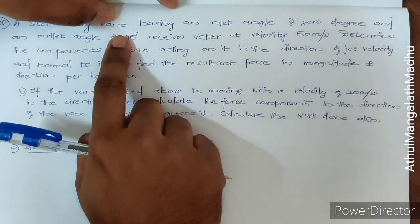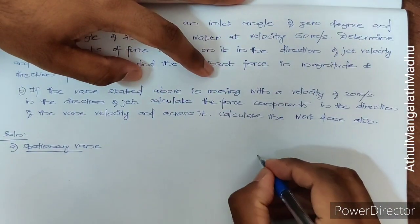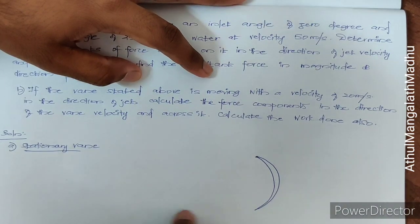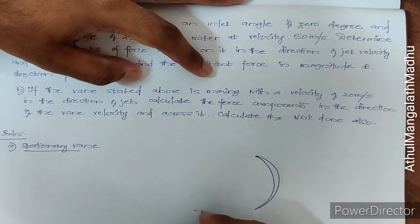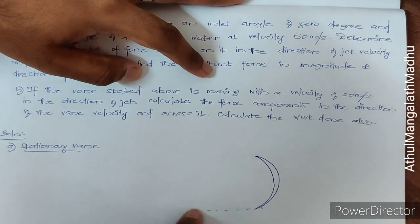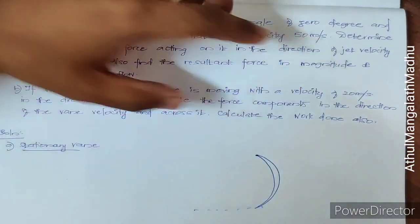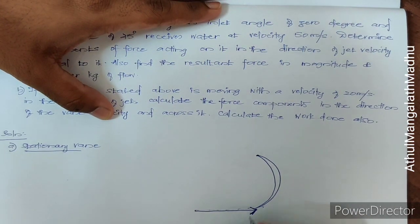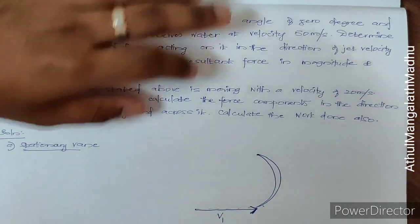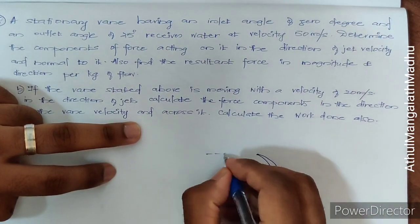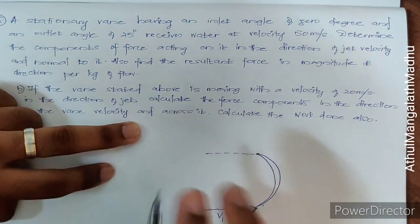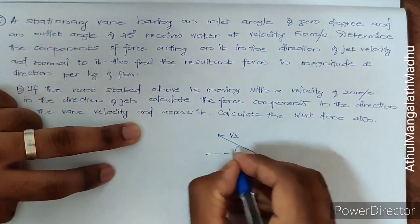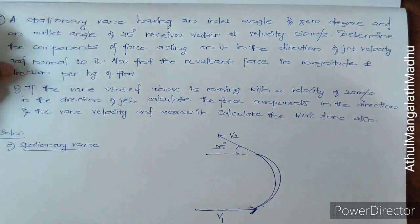So you have a vane like this and the inlet angle is 0 degree. I am assuming this is the part through which water is entering and this is the horizontal direction. With the horizontal direction it is making an angle of 0 degree, so the inlet water will be going like this — that is v1. And it is going out with an outlet angle of 25 degree, making an angle of 25 degree with the horizontal.